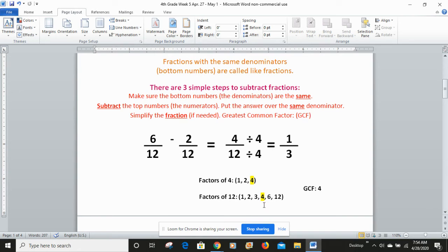But of those three, 4 is the greatest common factor. So then I divide my numerator 4 by 4, and I divide my denominator by 4, and that gives me the fraction 1/3. 4 divided by 4 is 1. 12 divided by 4 is 3. So 6/12 minus 2/12 equals 4/12, and in simplest form, 1/3.